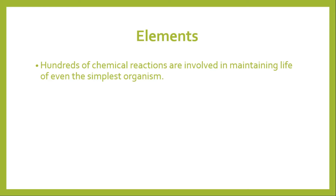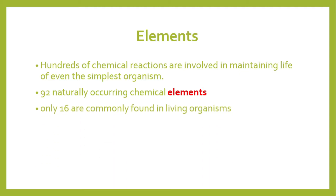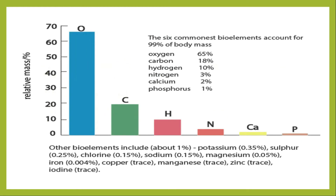The basic thing involved in those chemical reactions is the element. An element is a kind of matter that is made of atoms. If we talk about the total elements, there are 92 naturally occurring elements available. And there are only 16 elements that are found in our living body, which is why these are called bio-elements — those elements found in living organisms.